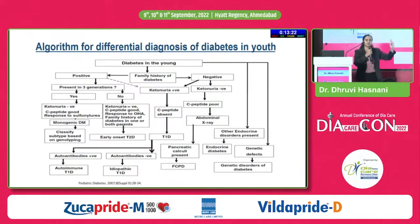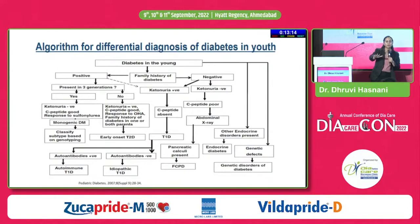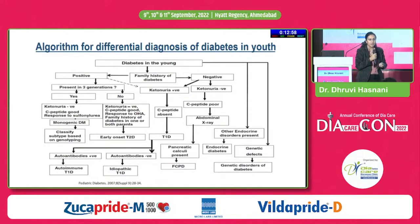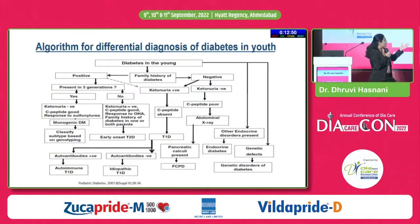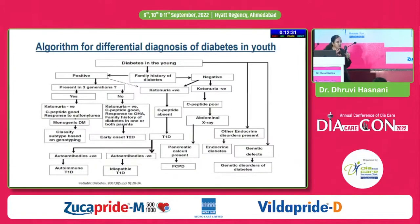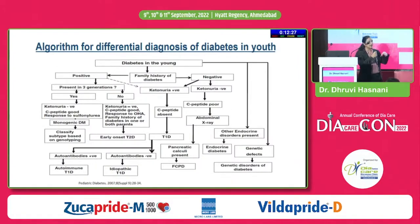If ketonuria is positive and C-peptide is less than 0.9, it is type 1. But if the C-peptide is borderline — say 0.9 to 1.0 — think about FCPD. Also get a lipase and amylase done; think about pancreatitis. FCPD will not always present with pain — there might be teenagers who just come with steatorrhea or mild pain in the left flank, and nobody gets an ultrasound abdomen or abdominal X-ray done. Think about other endocrine disorders and genetic defects, including Rogers syndrome and B12 deficiencies, which might cause some level of dysglycemia. Always try to follow a sort of algorithm.